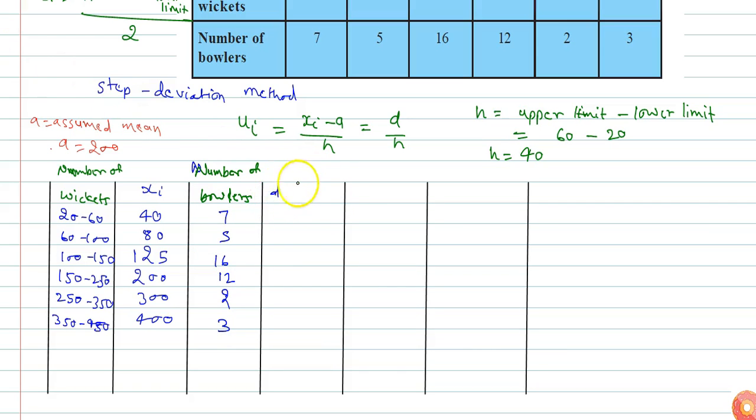The deviation column di is xi minus a, the deviation of assumed mean from each xi.